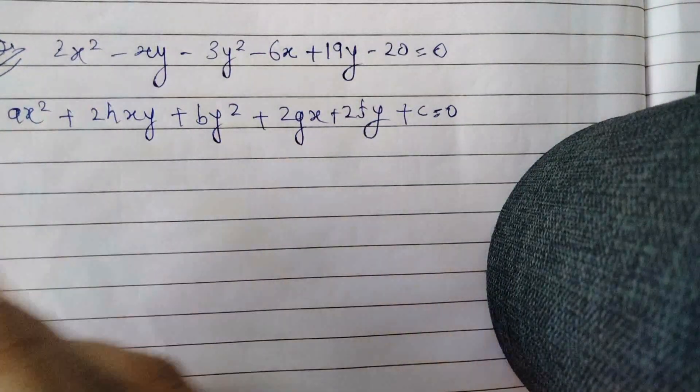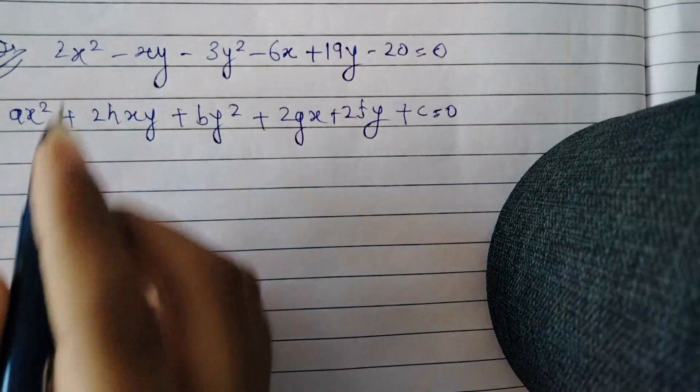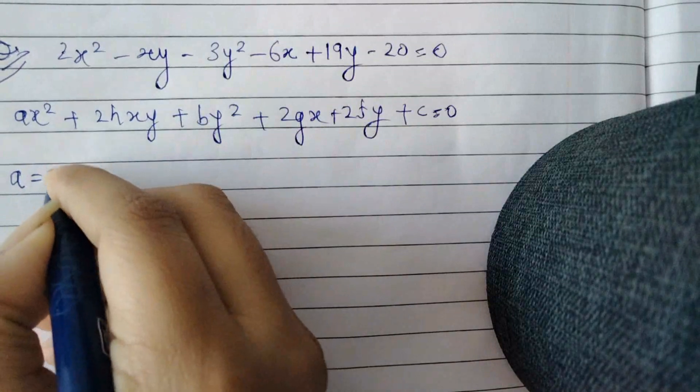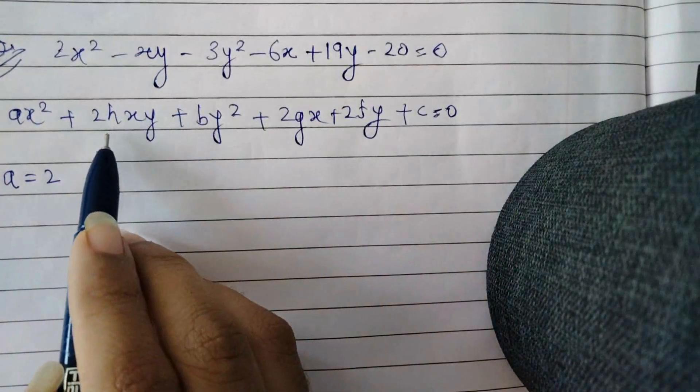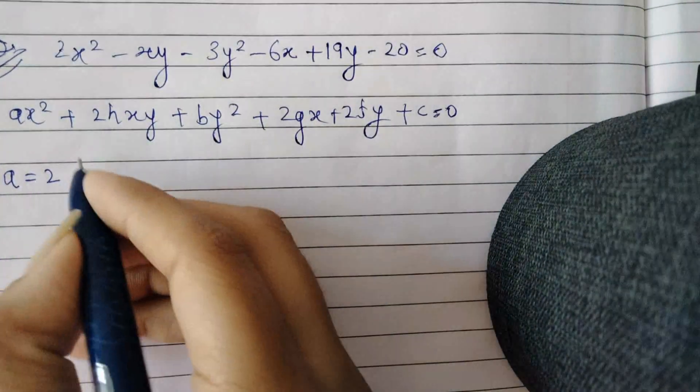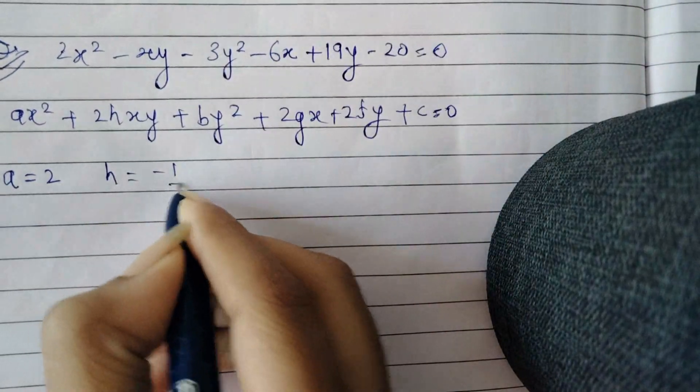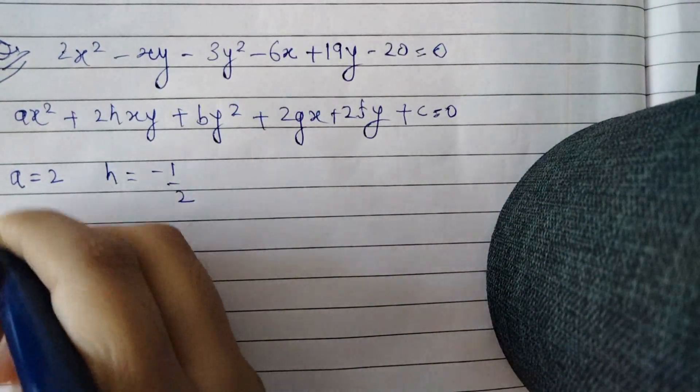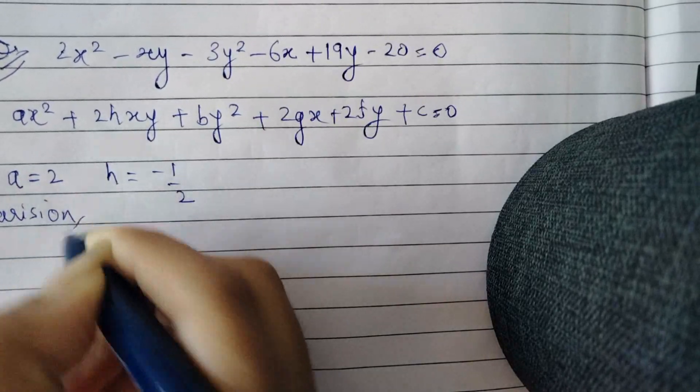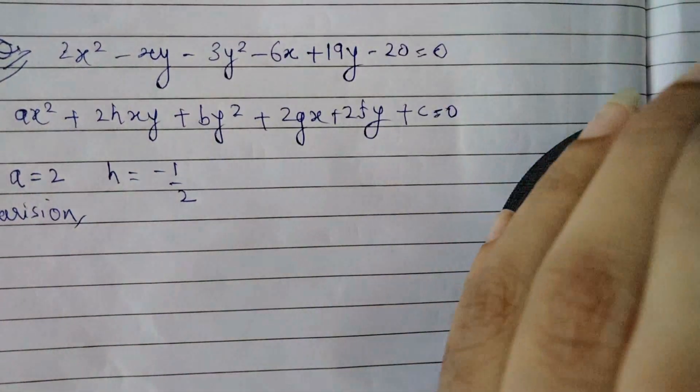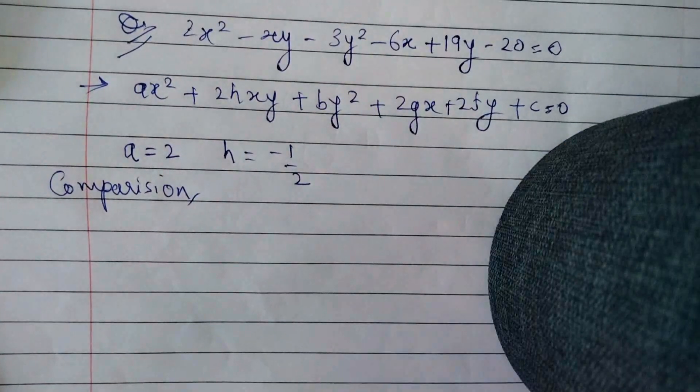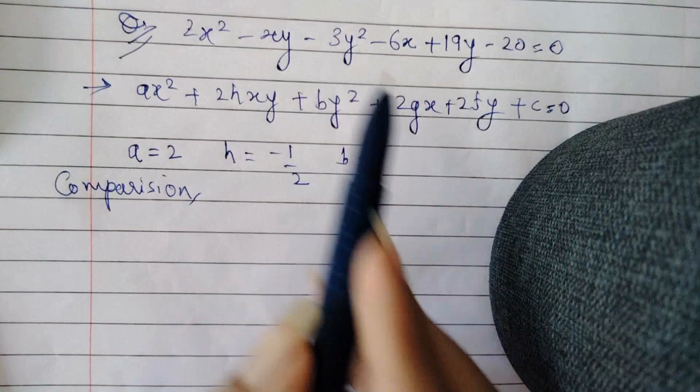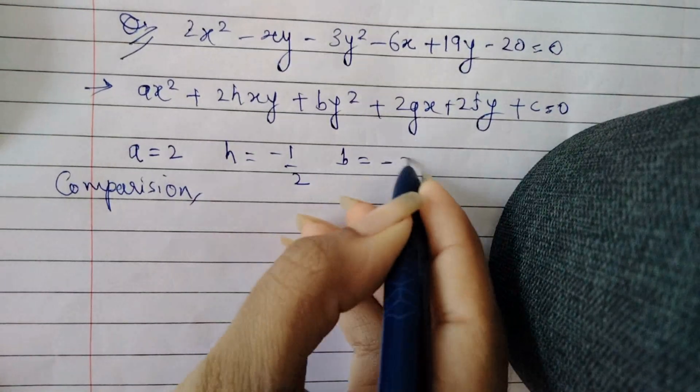So on comparing this to this equation, we can find that the value of a is 2, the value of h is -1/2. On comparison, we can find this out. And the value of b is -3.